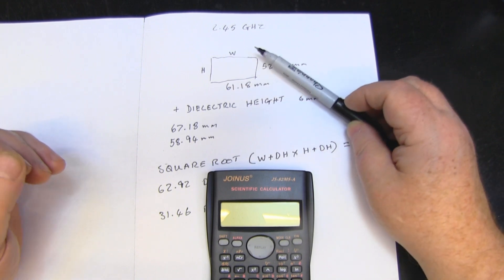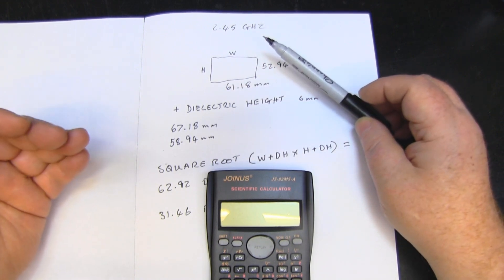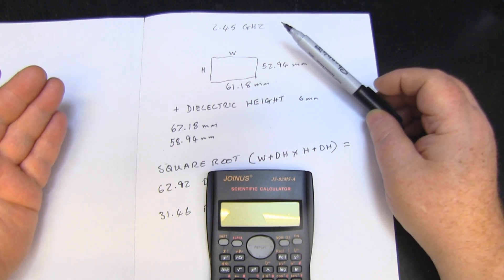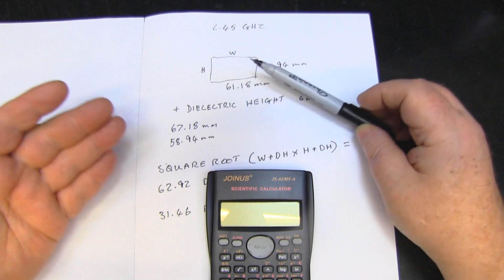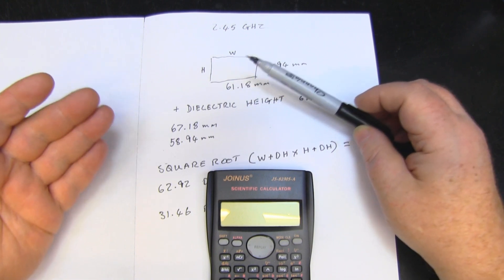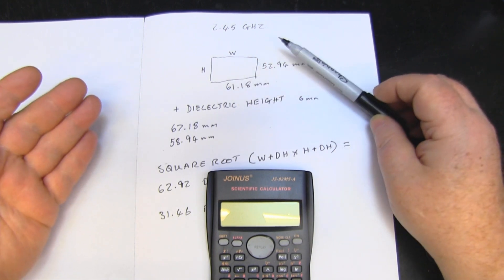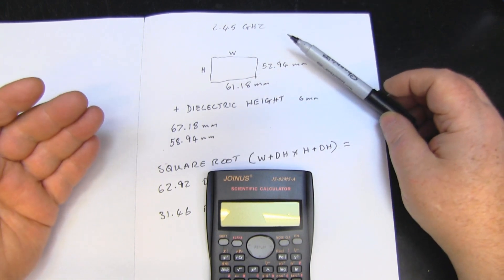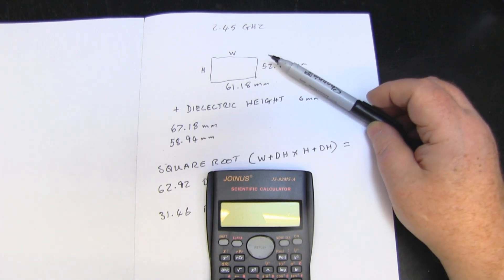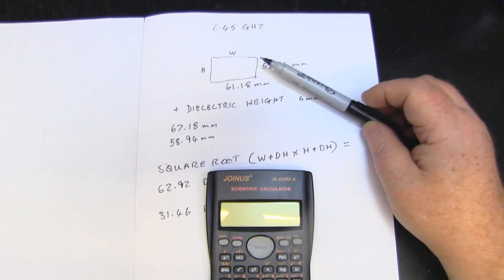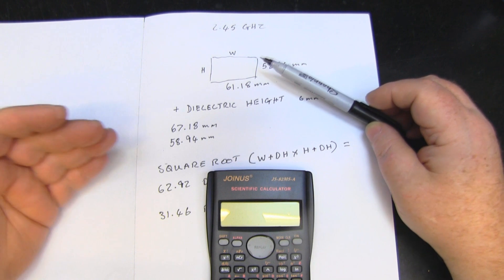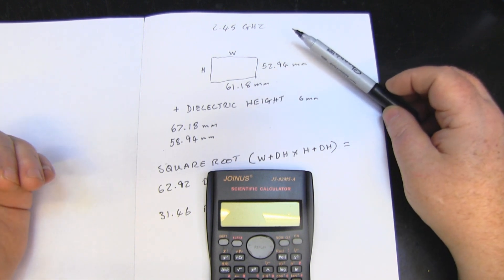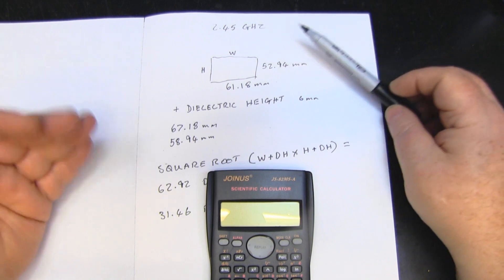You also need to incorporate your dielectric constant when you go onto these calculators. If you're using just plain old air then it's just one. FR4 board tends to be around four - it differs from 3.5 to 5, but I always put four in, middle of the road. That gets me in the area that I want to build the antenna for. If you're not sure about dielectric constants, just google it and it'll come up with a list of different materials.